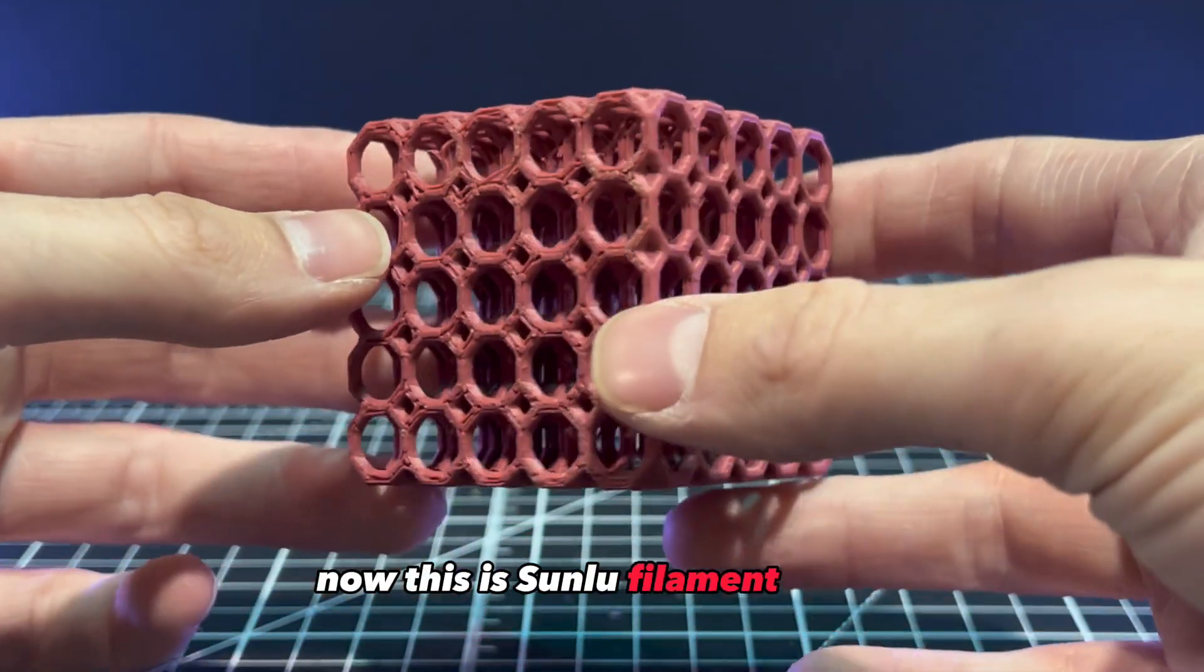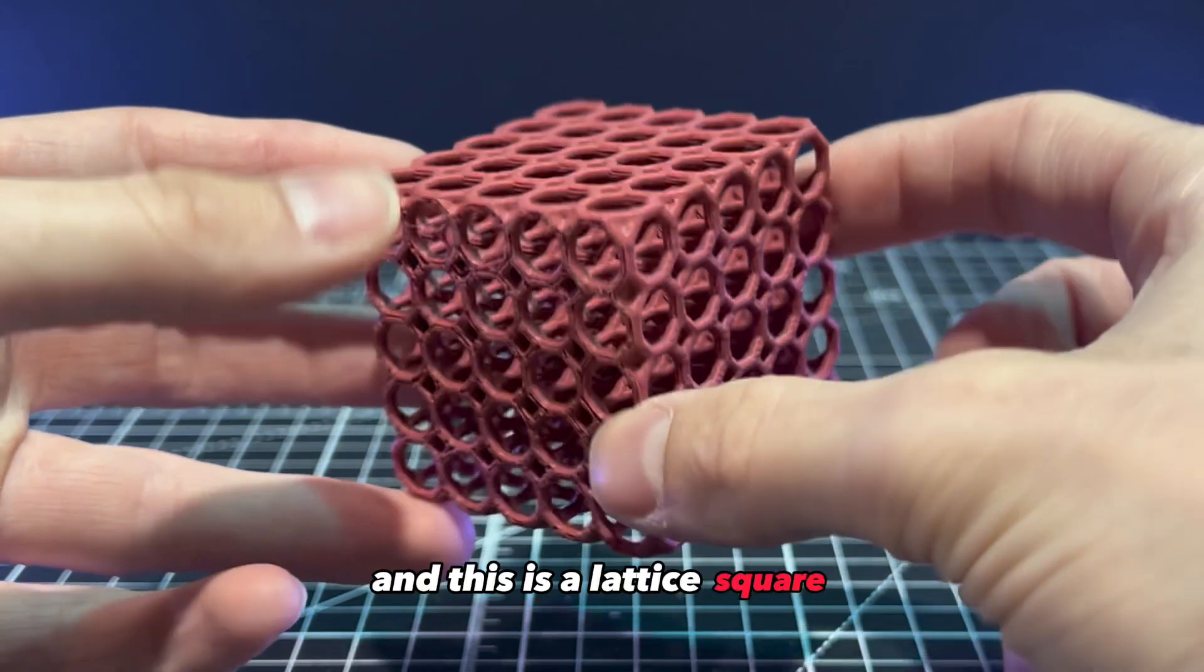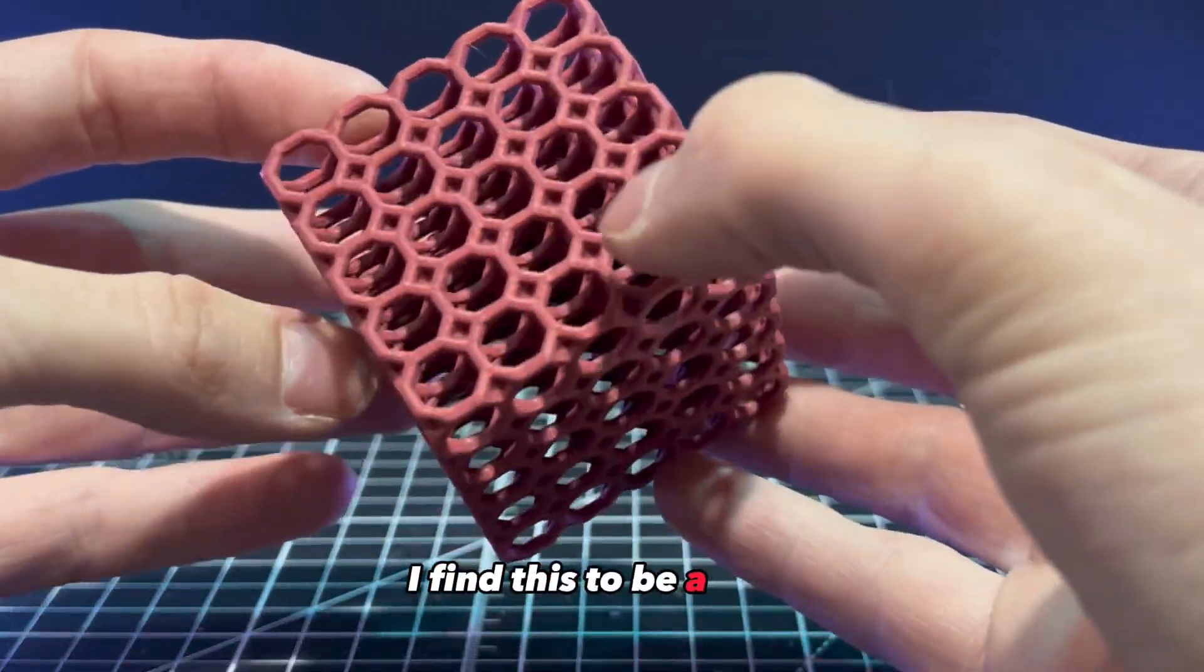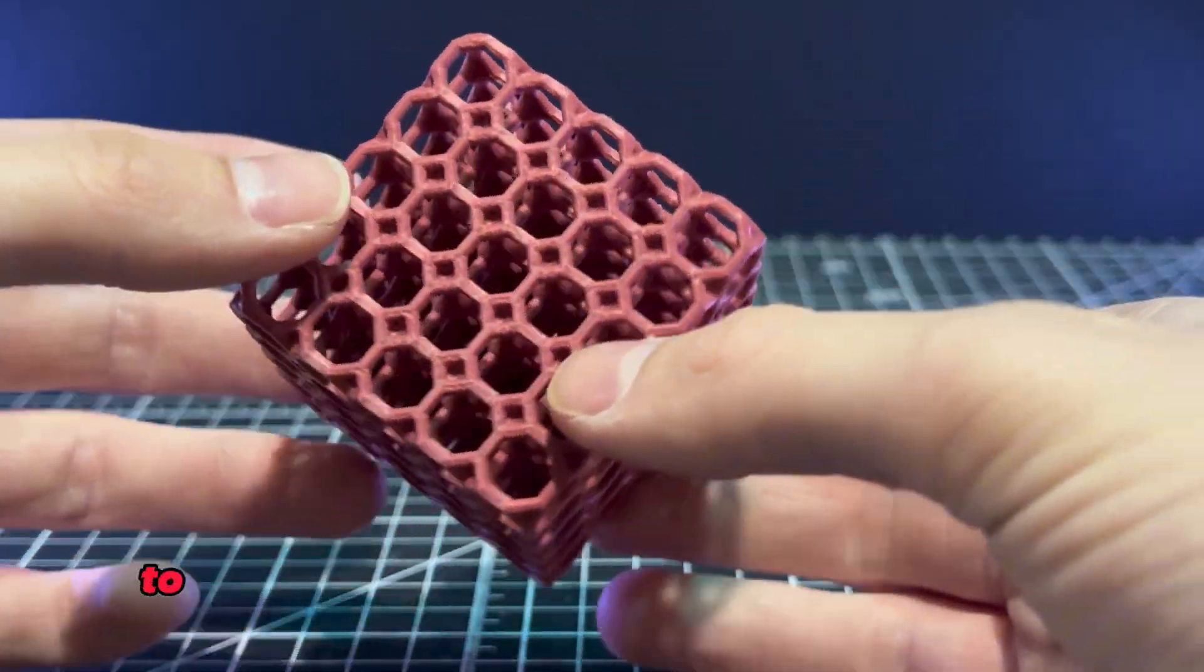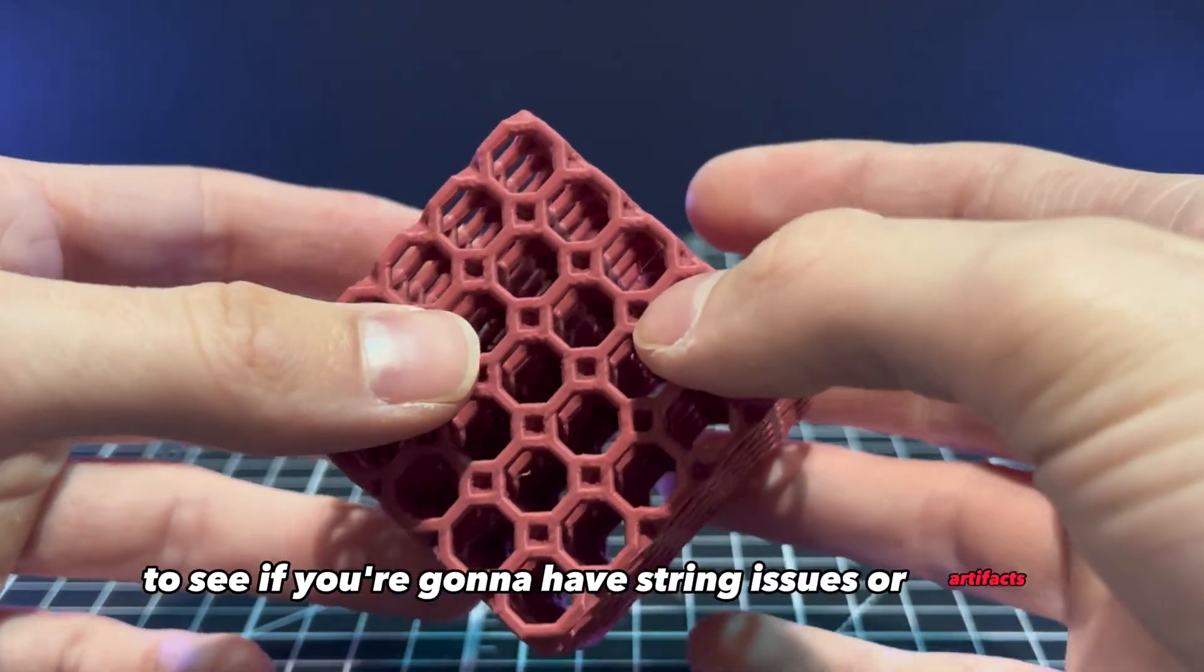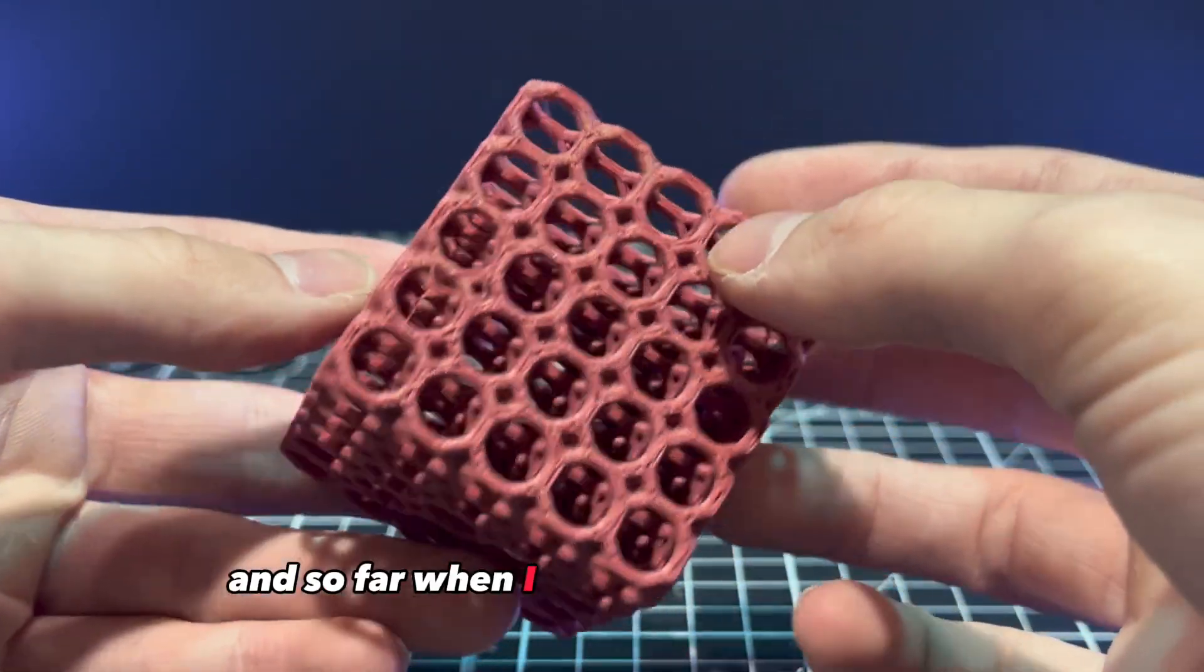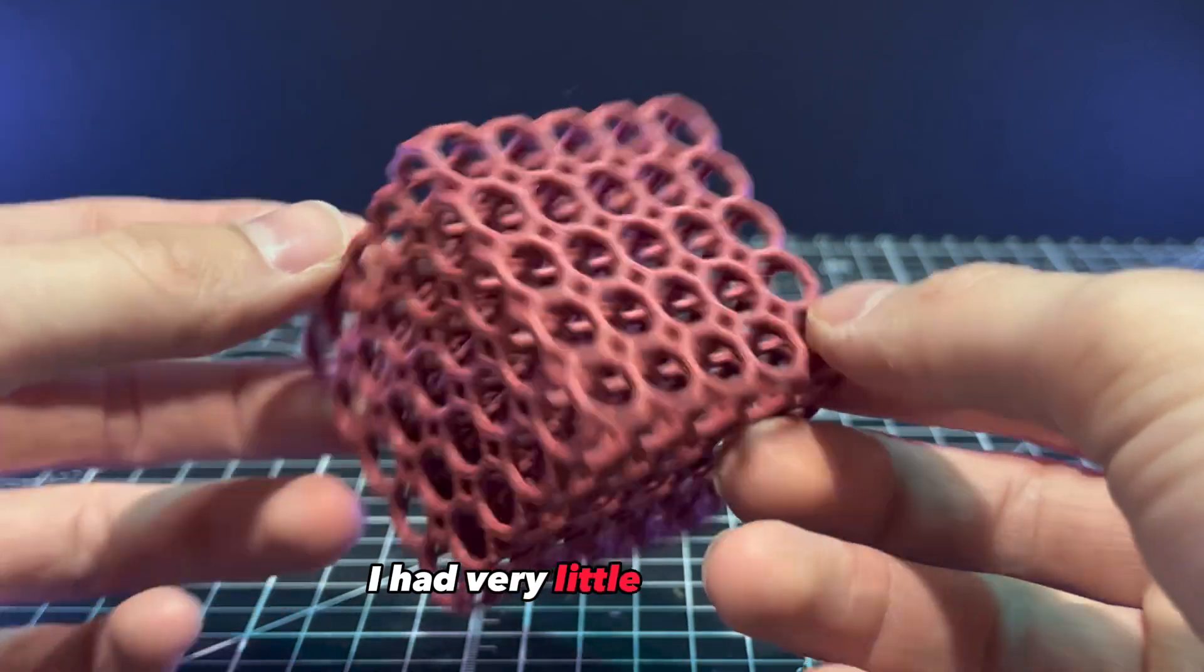Now this is Sunlu filament again, and this is a lattice square. I find this to be a very important print to see if you're going to have stringing issues or artifacts. So far when I was inspecting the cube, I had very little artifacting and very little blobs.